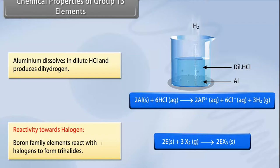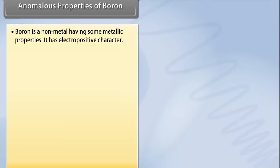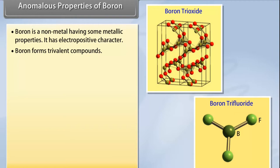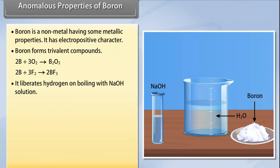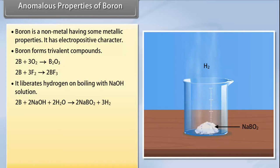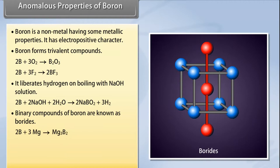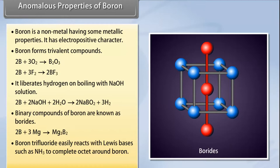Anomalous properties of boron: Boron is a non-metal having some metallic properties; it has an electropositive character and forms trivalent compounds. It liberates hydrogen on boiling with NaOH solution. Binary compounds of boron are known as borides. Boron trifluoride easily reacts with Lewis bases such as NH₃ to complete the octet around boron.